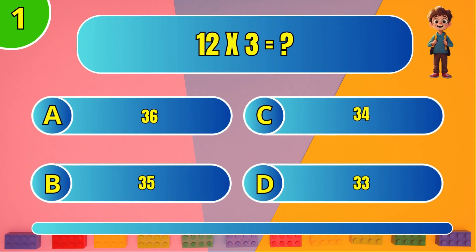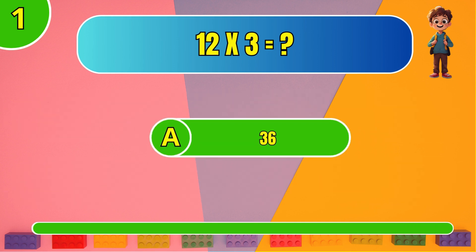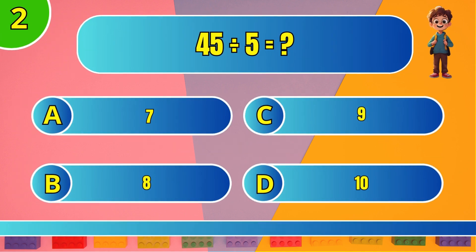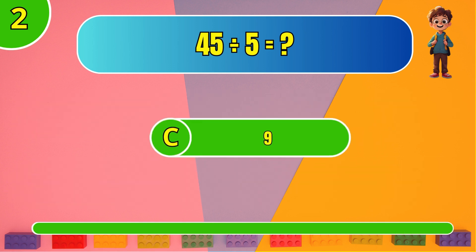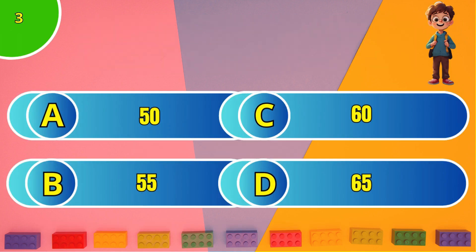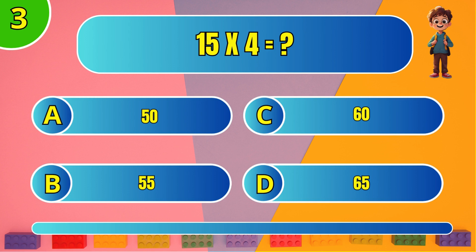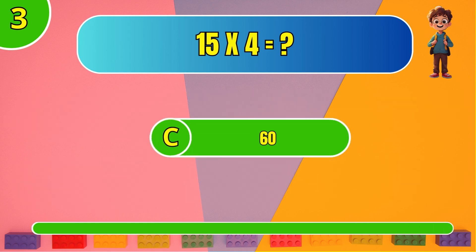What is 12 times 3? A: 36. What is 45 divided by 5? C: 9. What is 15 times 4? C: 60.